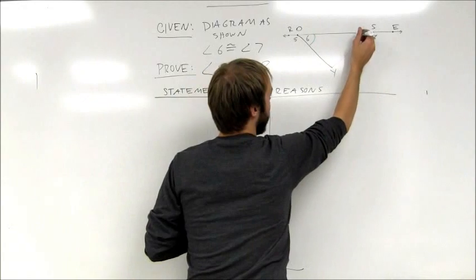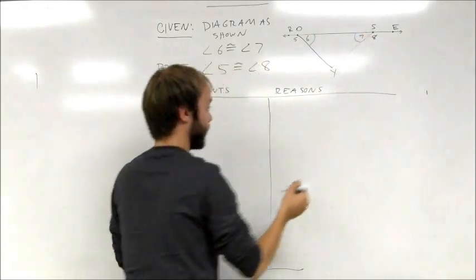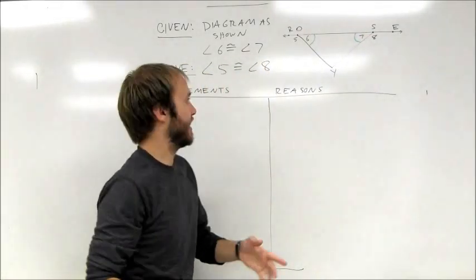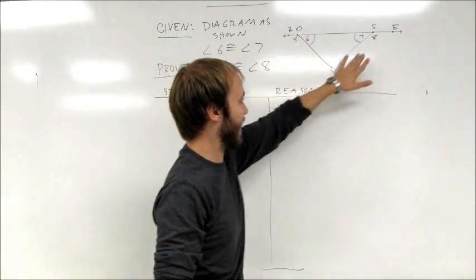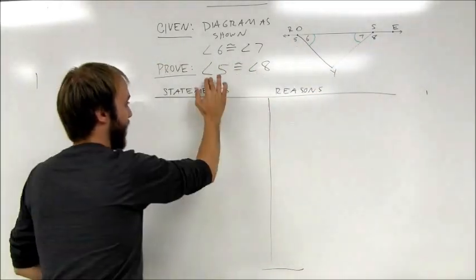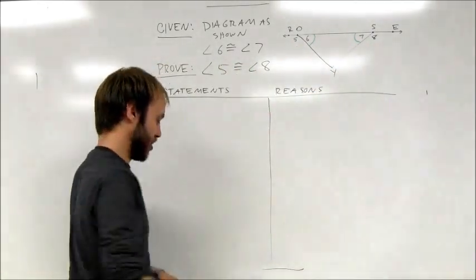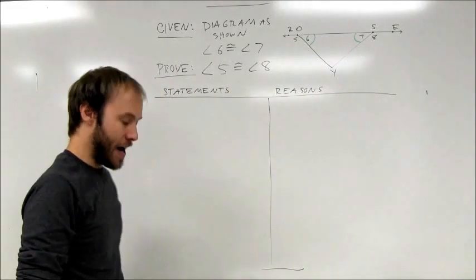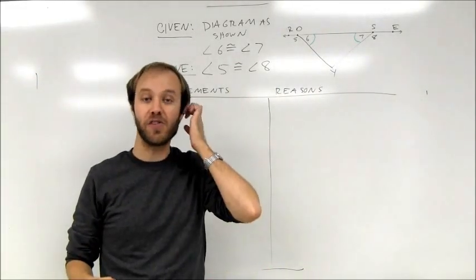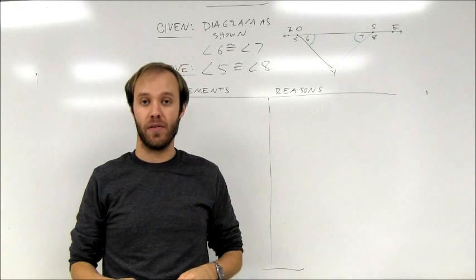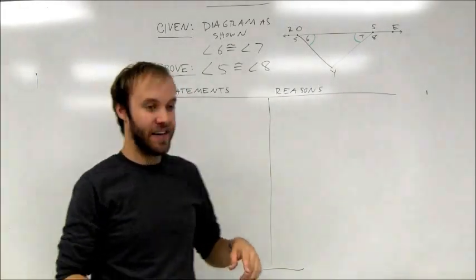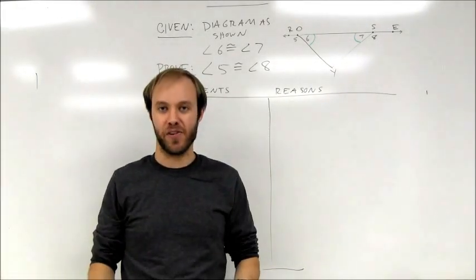It never hurts to mark both of those congruent. Visually, hopefully you can see that it really appears that angle 5 and angle 8 are congruent to each other. And in fact, that's what I'm going to be showing in my proof. I'm going to show this proof two different ways. The first way is using the idea of supplementary angles.